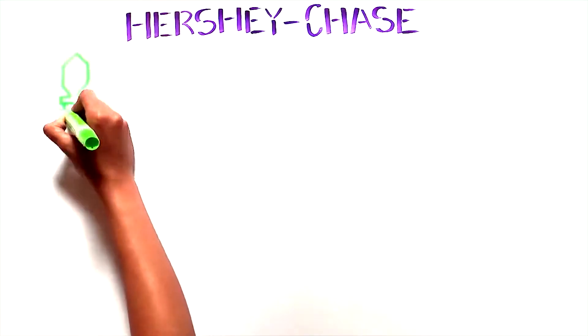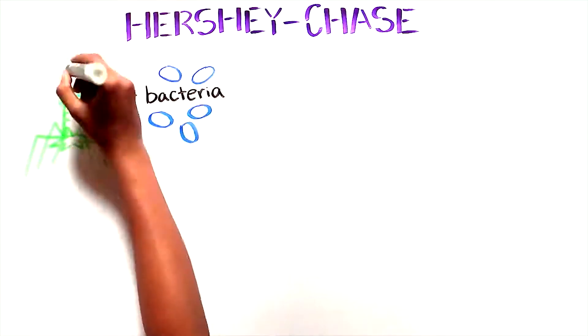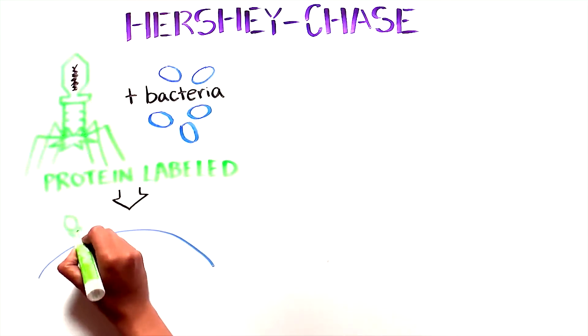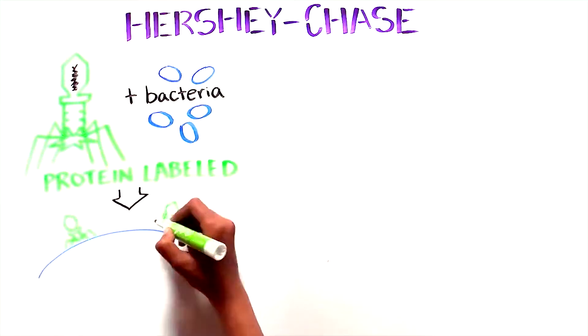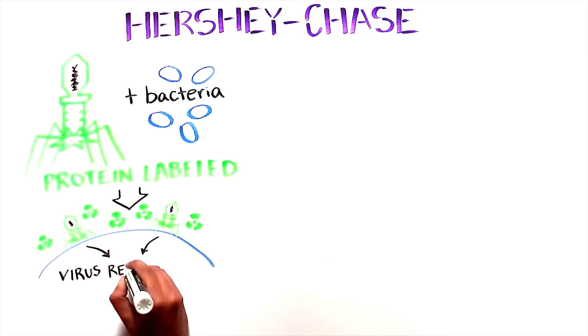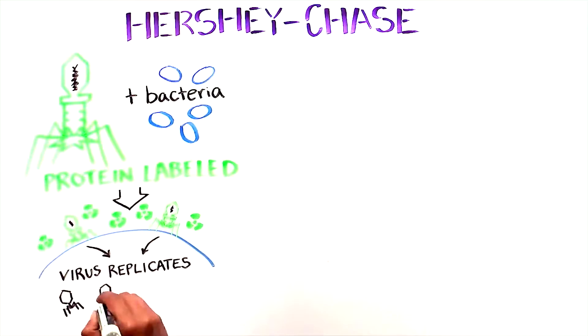When they prepared a virus with sulfur labeled protein and mixed it with bacteria, they found that most of the radioactivity remained with the virus and did not enter the bacteria. When they allowed the virus to replicate and collected the new viruses, less than 1% of the protein radioactivity from the viral parents were found in the newly replicated virus. So the protein was not being inherited.